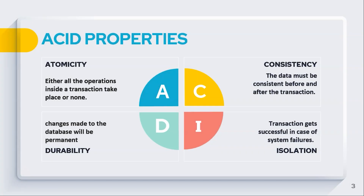ACID properties include: Atomicity — either all operations inside a transaction take place or none of them do. Consistency — the data must be consistent before and after the transaction. For example, if account A transfers 500 to account B, and account B originally had 1000, then after the transaction account B should have 1500.